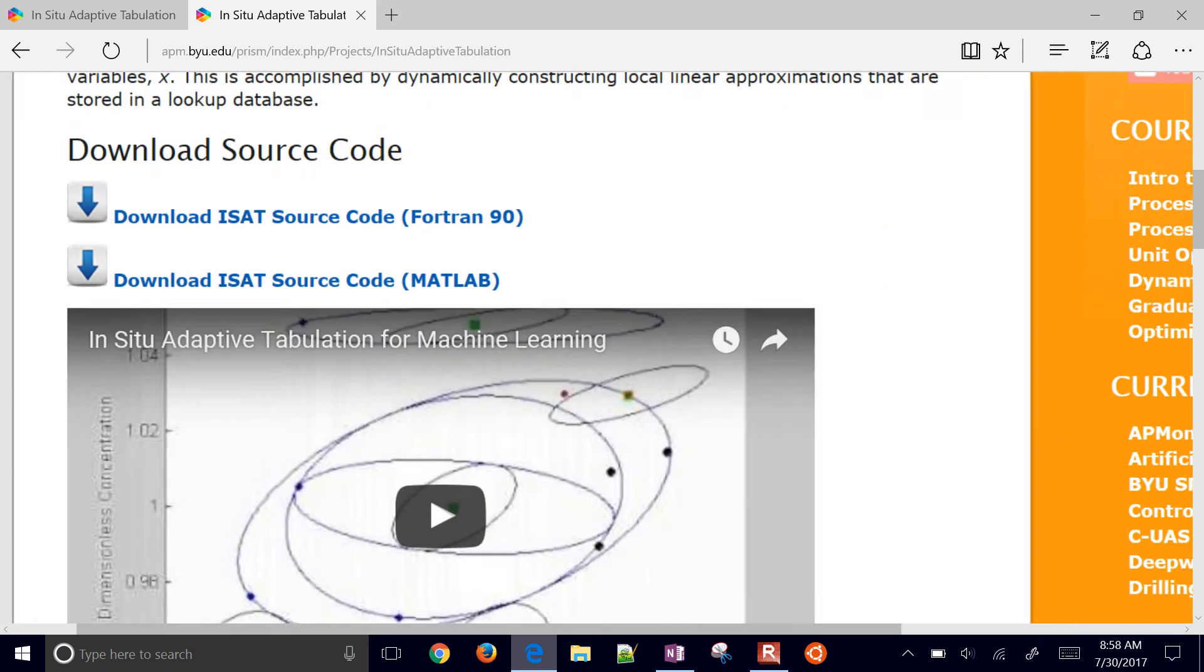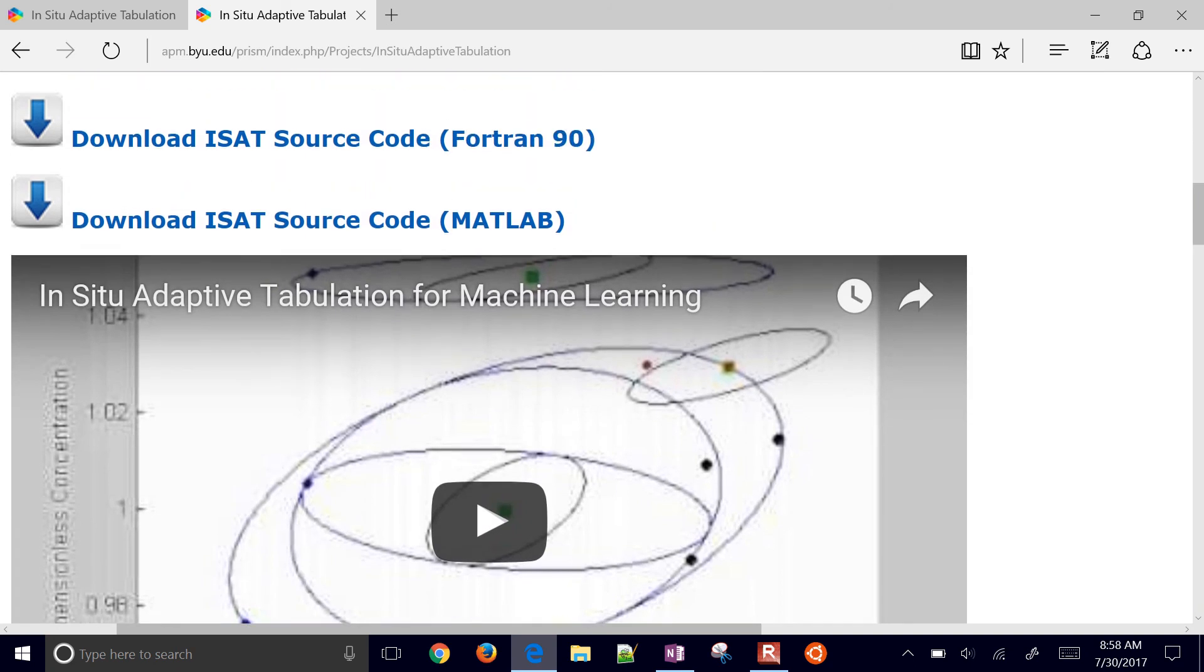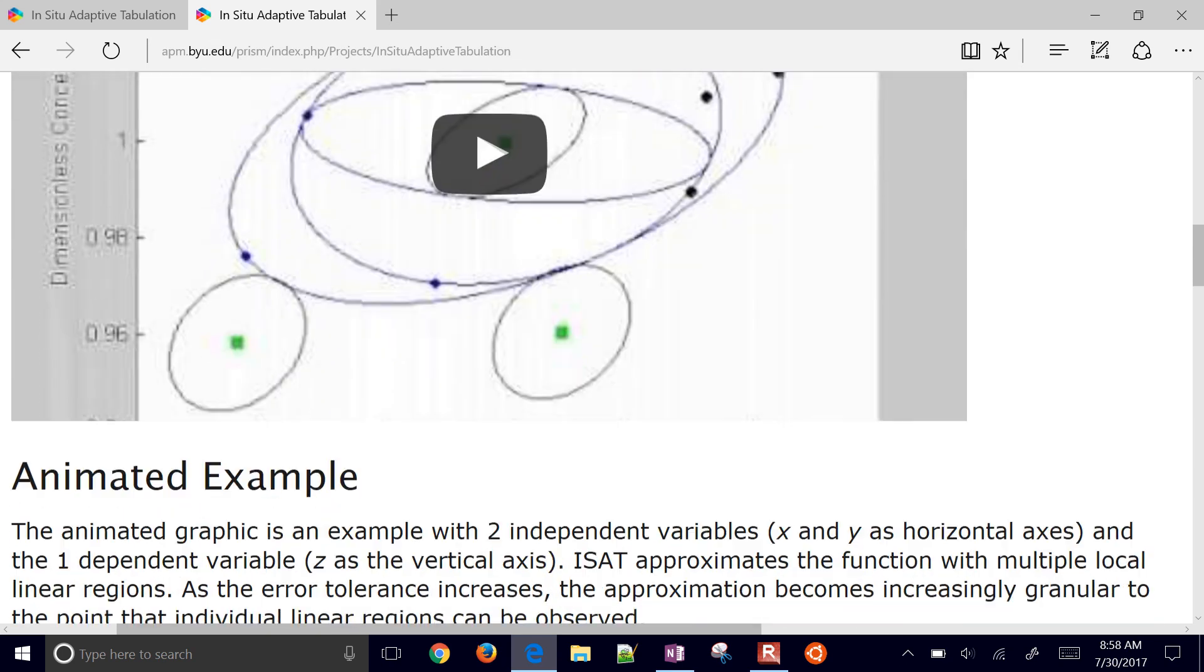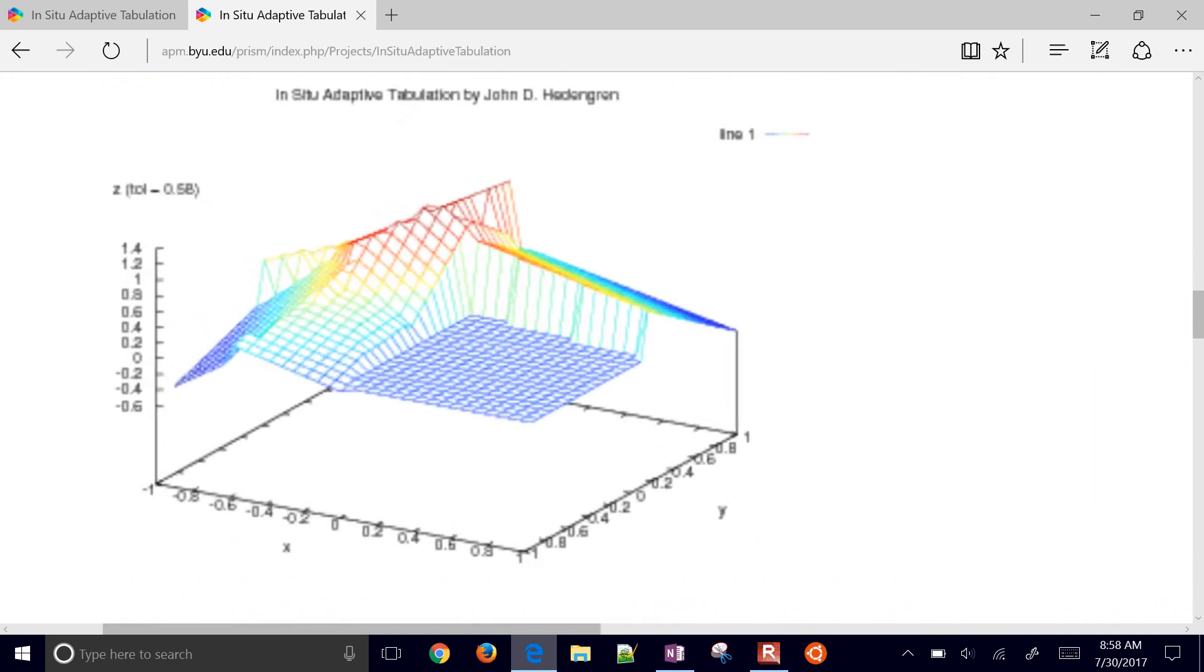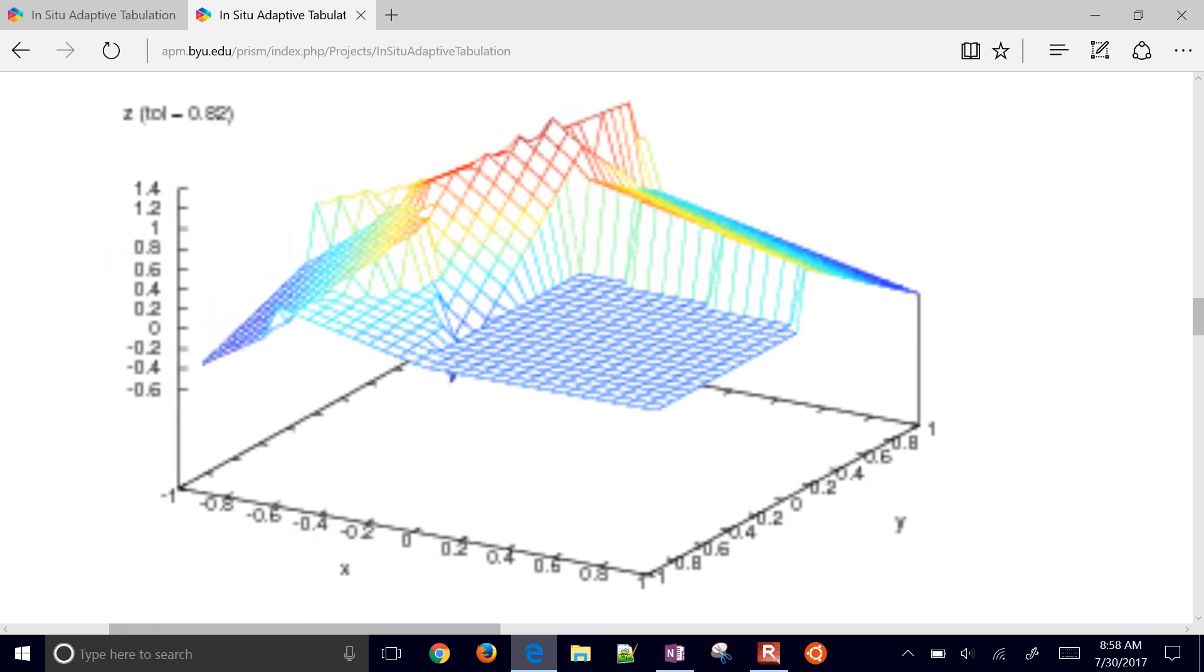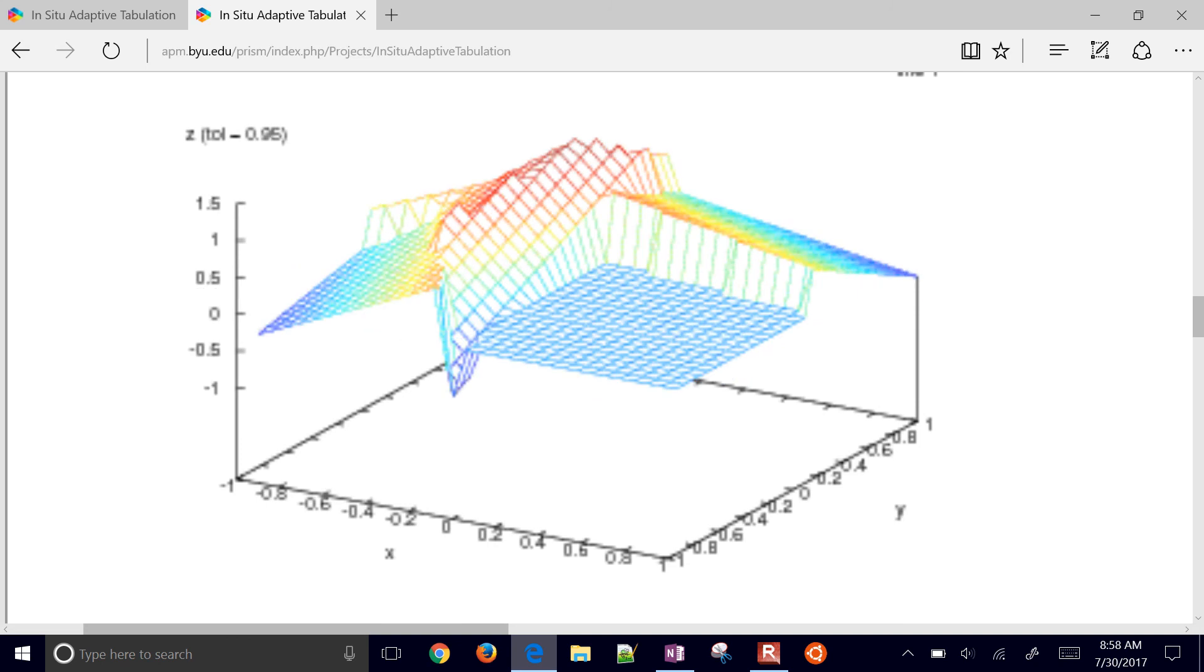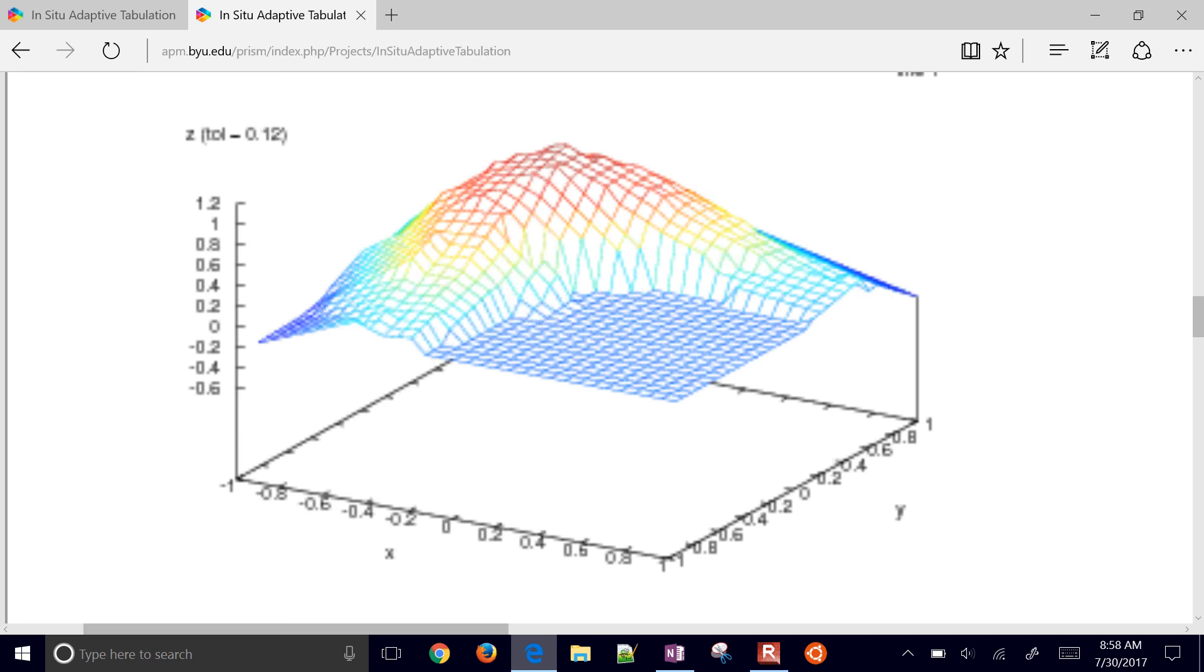So there's a source code there. There's just an animation here of how the storage and retrieval works. And I'll include this video there as well. But it's in Fortran if you need something fast or MATLAB as well. And then this just shows an overview of ISAT in progress, in action. So it has that original nonlinear function.